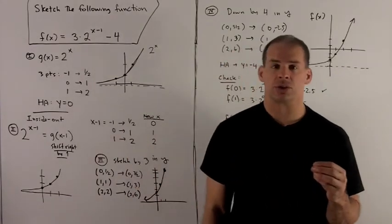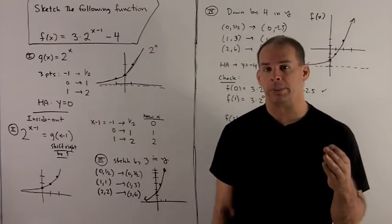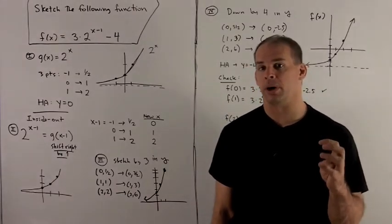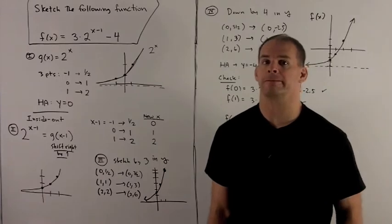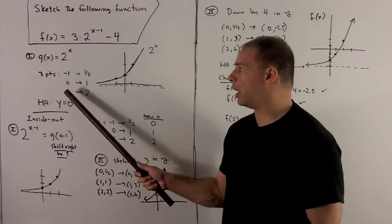The way I graph this, the trick is you need four things. You need to know how to evaluate it on three points, and you need to know where to put the horizontal asymptote. For my three points, I always go with minus 1, 0, and 1.